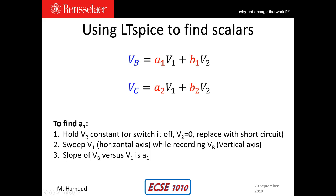So those three steps are described underneath the equation. We hold V2 constant or switch it off, which means make V2 zero, which means the resistance across that voltage source is zero, meaning replace the voltage source with a short circuit.